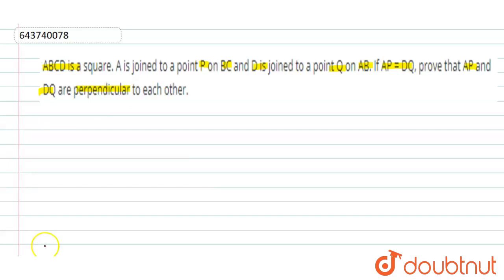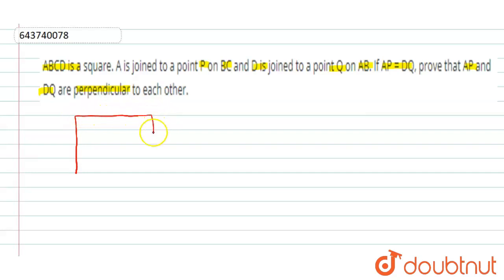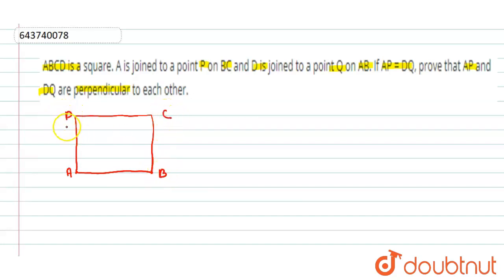First, we will draw a square and make our constructions according to the question. This is our square ABCD.